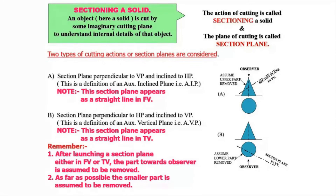There are two different types of section planes we will encounter. The first is a section plane which is perpendicular to VP and inclined to HP. Since the section plane is perpendicular to VP, it will appear as a straight line in the front view. So the section plane appears as a straight line in the front view when it is perpendicular to VP and inclined to HP — similar to an auxiliary inclined plane.